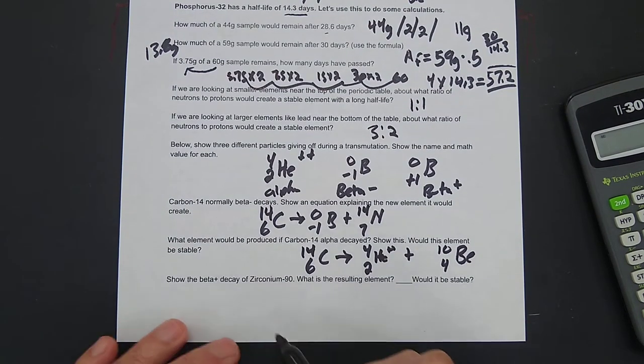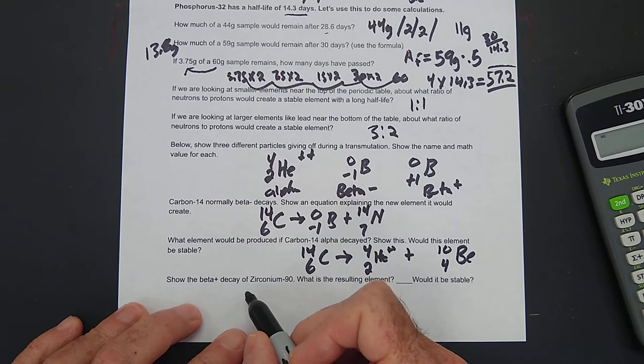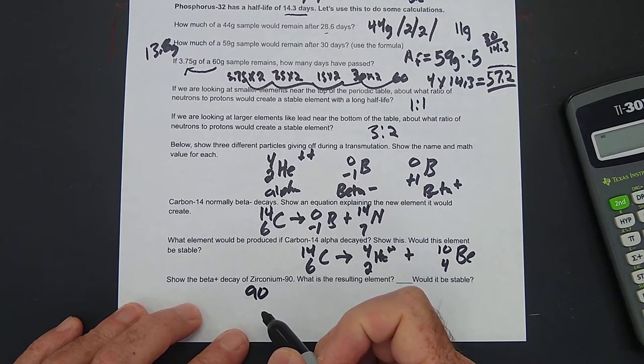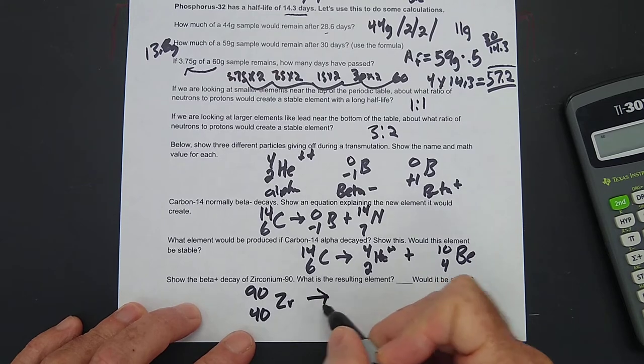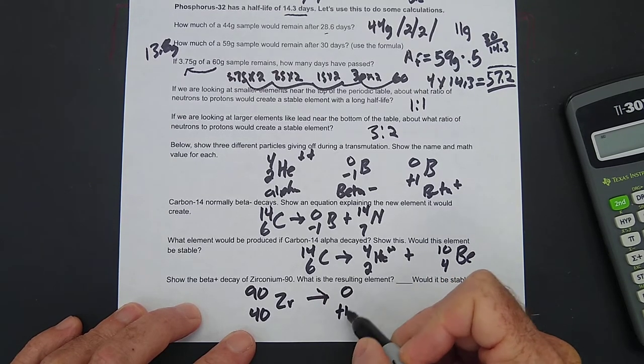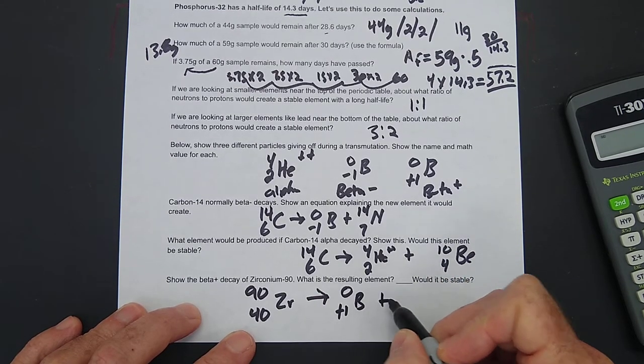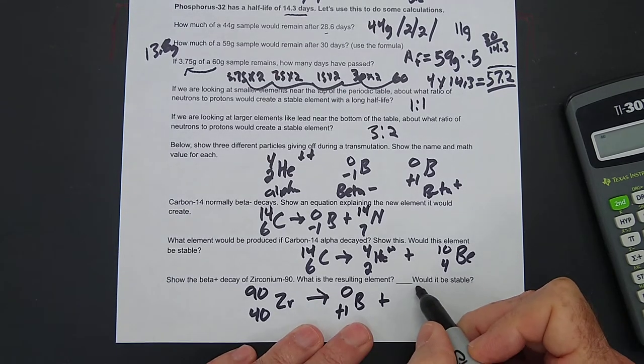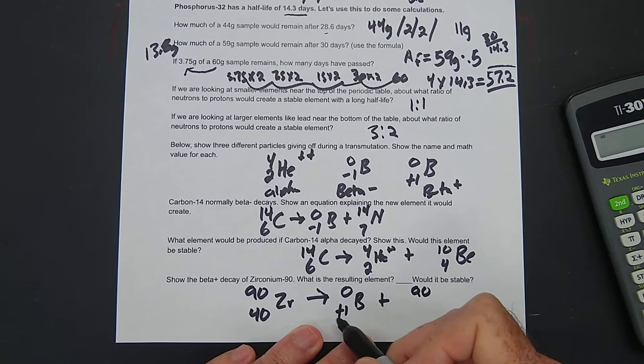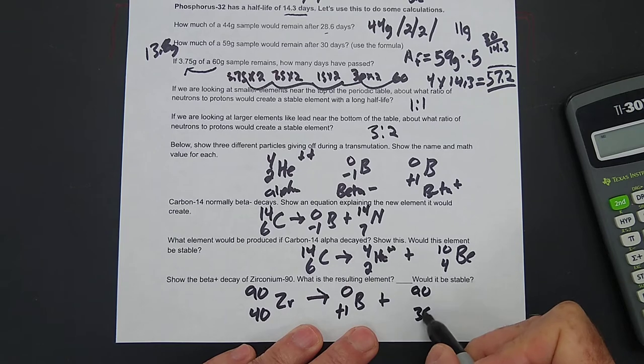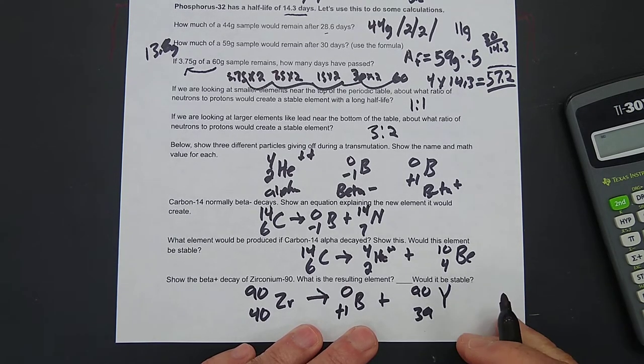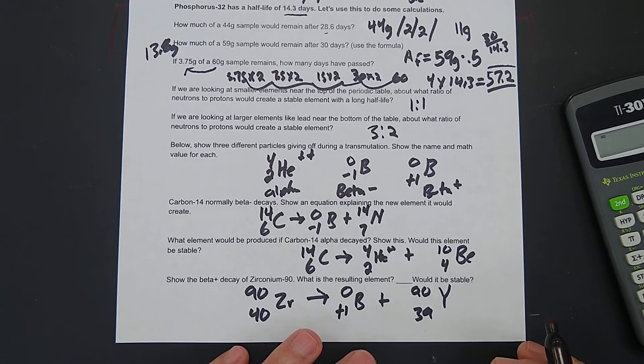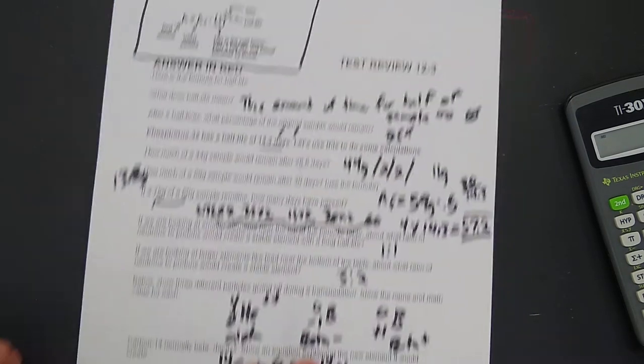Show the beta positive decay of zirconium-90. Okay. 90 over 40 Zr beta positive decay. Here's a positron. 90. What plus 1? 39. Yttrium. Yttrium 90. Okay. All right.